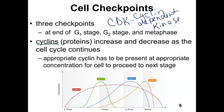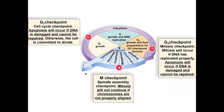Cyclins and CDKs work together to help maintain the cell cycle. At the G1 checkpoint, the cell checks to make sure the DNA is not damaged and that the cell is large enough. If there is a mutation in the DNA or the cell is not growing properly, the cell is going to undergo apoptosis.